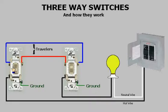When a person switches one of the three-ways, the light comes on. When he switches the other, the light goes off.